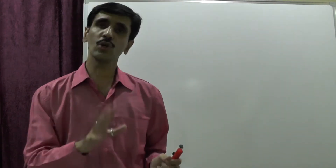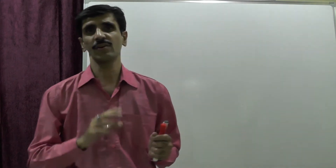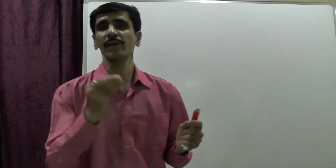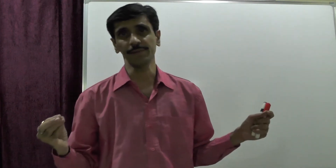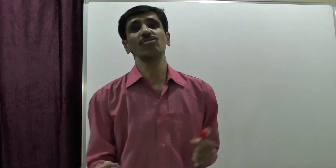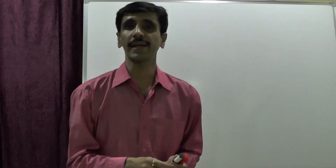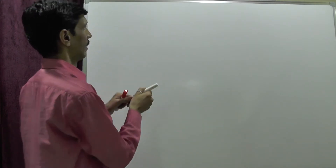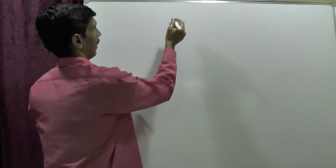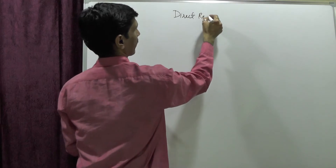In total we are going to discuss 5 methods, and I will give you some simple examples under every category so that you understand the concept very well. We start with the first synthetic method of organometallic compounds, and that is called the direct reaction of metals.